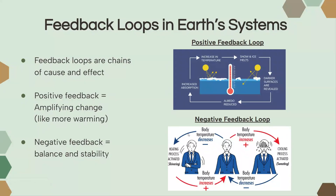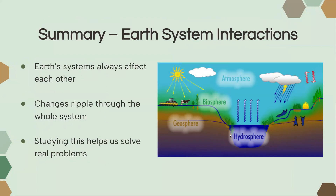Now, a negative feedback loop is about balancing. This normally happens in our bodies. If our body temperature increases, we start to sweat to cool down and then our body temperature decreases — this is balance and stability. And if our body temperature decreases, we start to shiver and then our body temperature increases to go back to stability. That's what a negative feedback loop is.